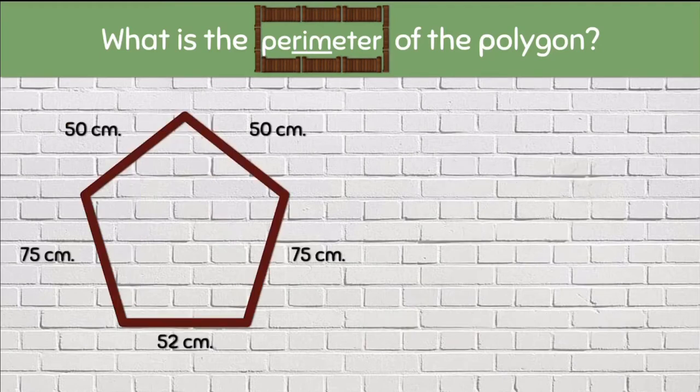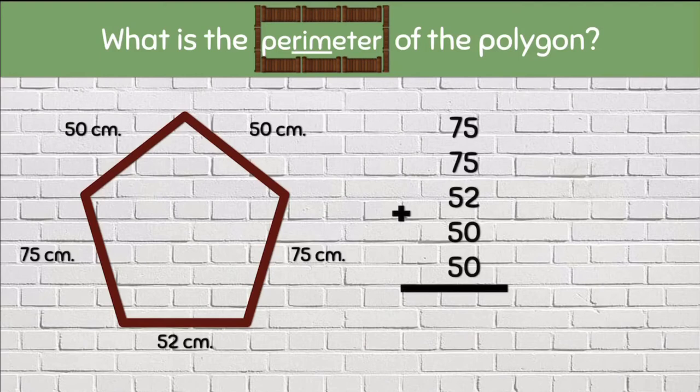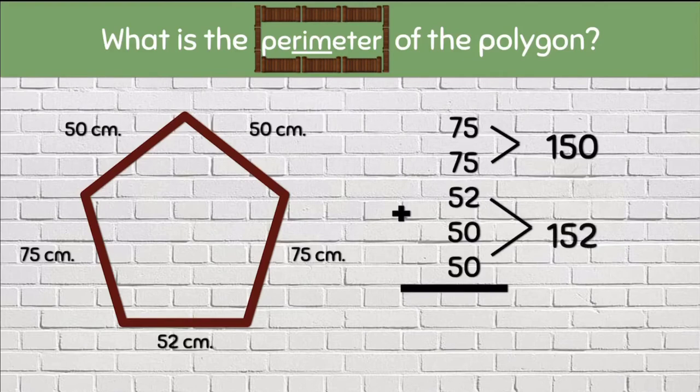Here we have a pentagon with five sides. Let's add up all five sides. 75 plus 75 plus 52 plus 52 plus 50 plus 50. We know that 75 plus 75 is 150. We know that 50 plus 50 plus 52 makes 152.